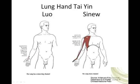It moves up, comes across under the clavicle, connects with the shoulder, moves down to the pectoral region and the anterior portion of the ribs, to the end of the floating ribs, and connects with the diaphragm.